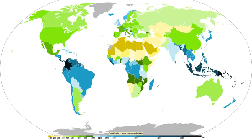Extratropical cyclones can bring cold and dangerous conditions with heavy rain and snow, with winds exceeding 119 km/h, sometimes referred to as windstorms in Europe. The band of precipitation associated with their warm front is often extensive, forced by weak upward vertical motion of air over the frontal boundary, which condenses as it cools and produces precipitation within an elongated, wide, stratiform band — meaning falling out of nimbostratus clouds. When moist air tries to dislodge an arctic air mass, overrunning snow can result within the poleward side of the elongated precipitation band.